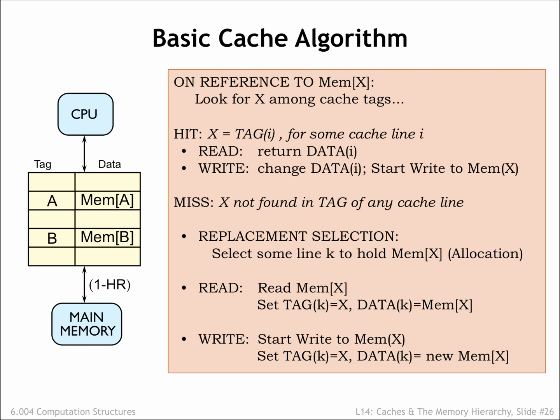On a write, we'll update the tag and data in the selected cache line and at some point update the corresponding location in main memory. So the contents of the cache is determined by the memory requests made by the CPU. If the CPU requests a recently used address, chances are good the data will still be in the cache from the previous access to the same location. As the working set slowly changes, the cache contents will be updated as needed. If the entire working set can fit into the cache, most of the requests will be hits, and the average memory access time will be close to the cache access time. Of course, we'll need to figure out how to quickly search the cache — in other words, we'll need a fast way to answer the question of whether a particular address tag can be found in some cache line. That's our next topic.